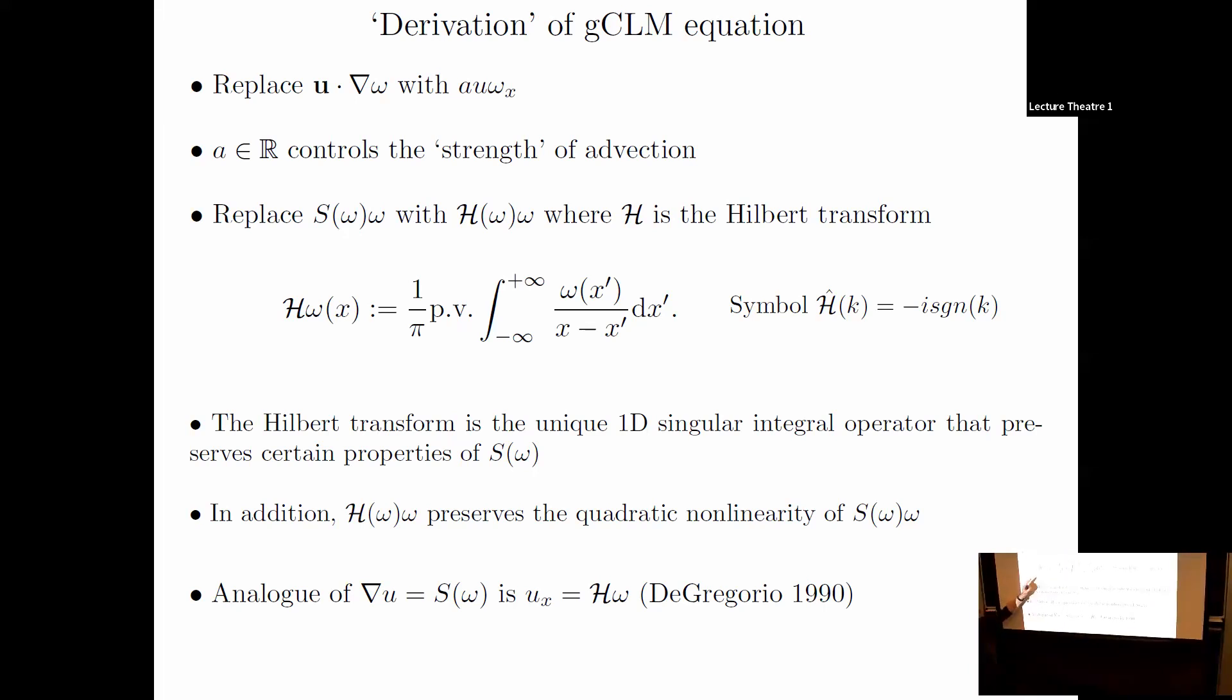Why do we do that? The Hilbert transform is the unique linear 1D singular integral operator that preserves the most important properties of S. It commutes with translations, dilations, and other things. In addition, this preserves the quadratic nonlinearity of the original term. Finally, we recover velocity from vorticity. In 3D Euler, that comes from curl u equals omega. I replace that with its 1D analog with H instead of S.